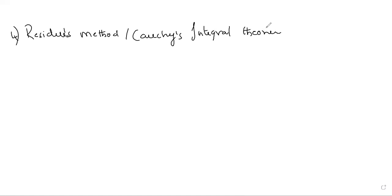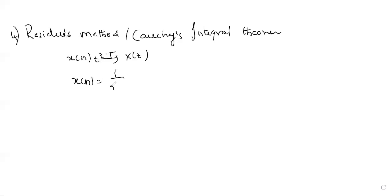We are going to use Cauchy's integral theorem to solve the problems. Let us see the theoretical part first — what is the theorem and how to use it. Until now I have not given you the standard formula to find the inverse Z-transform with its reverse kernel. The original formula to find the inverse Z-transform is: 1 over 2 pi j, times the closed contour integral over the region of convergence of X of Z times Z to the power N minus 1, dZ.